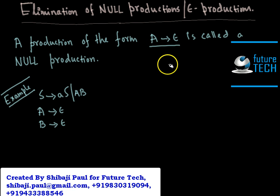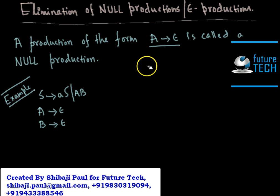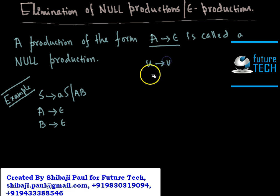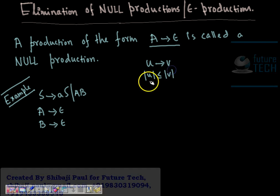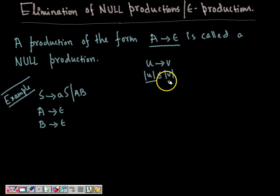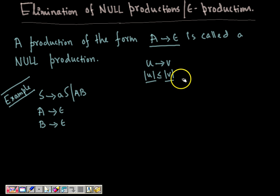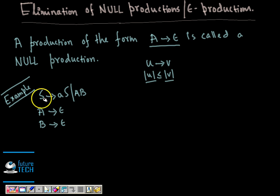Such productions are not desired. From type one onward, each grammar is a length-increasing grammar, meaning that for any production rule U → V, the length of the left-hand side should be less than or equal to the length of the right-hand side. If epsilon productions are allowed, this property may be violated. Now, how do we eliminate epsilon productions? Let us take this example.